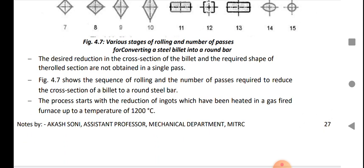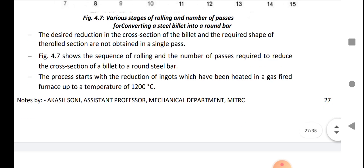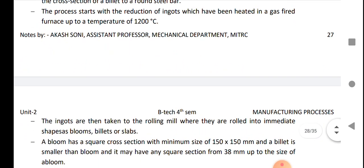The desired reduction in the cross section of the billet and the required shape of the rolled section are not obtained in a single pass. We perform the operation many times, then we obtain the required shape or size. The sequence of the rolling and the number of passes required to reduce the cross section of the billet starts with the reduction of the ingot which has been heated in a gas-fired furnace up to temperature of 1200 degrees centigrade.